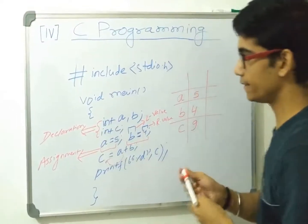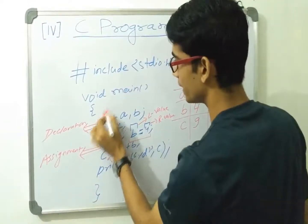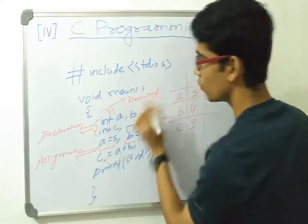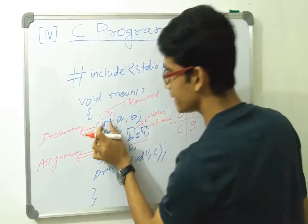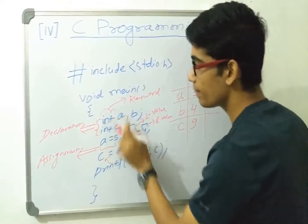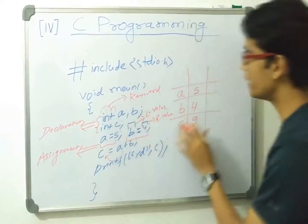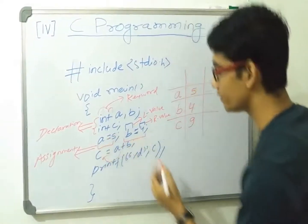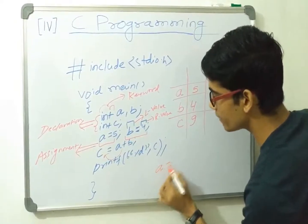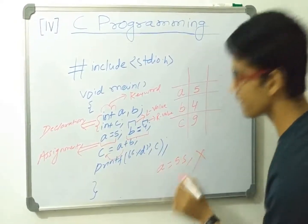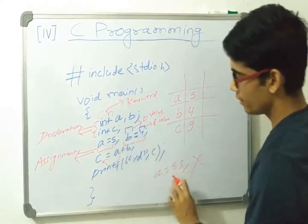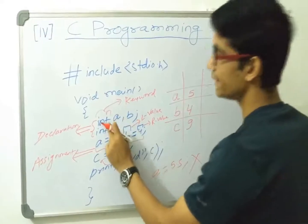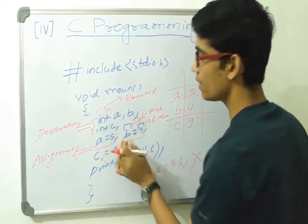Here, 'int' is a keyword — it has a special meaning. It tells the compiler that a and b should store integer type values only. So storing 5 is fine, but writing a = 5.5 is an error. We cannot store real or decimal values in an integer type. The 'int' keyword signifies that a and b are of integer type.